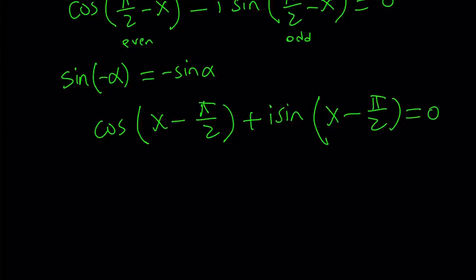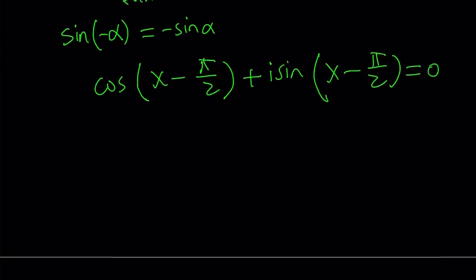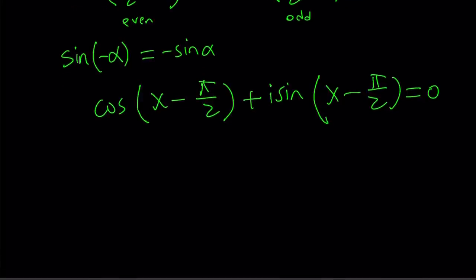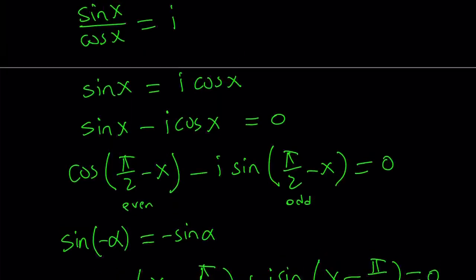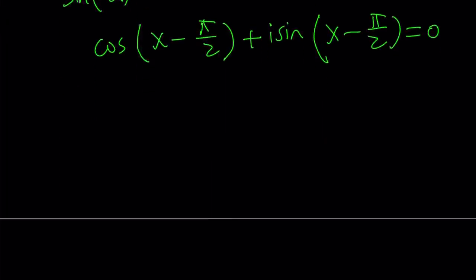And this is equal to 0. And that's my cat if you heard the meow in the background. So this is my equation. And Euler said this is equivalent to e to the power i times x minus pi over 2 equals 0. And that's very, very problematic. Why? Because e to the power something can never equal 0. Even for complex x values. And correct me if I'm wrong.